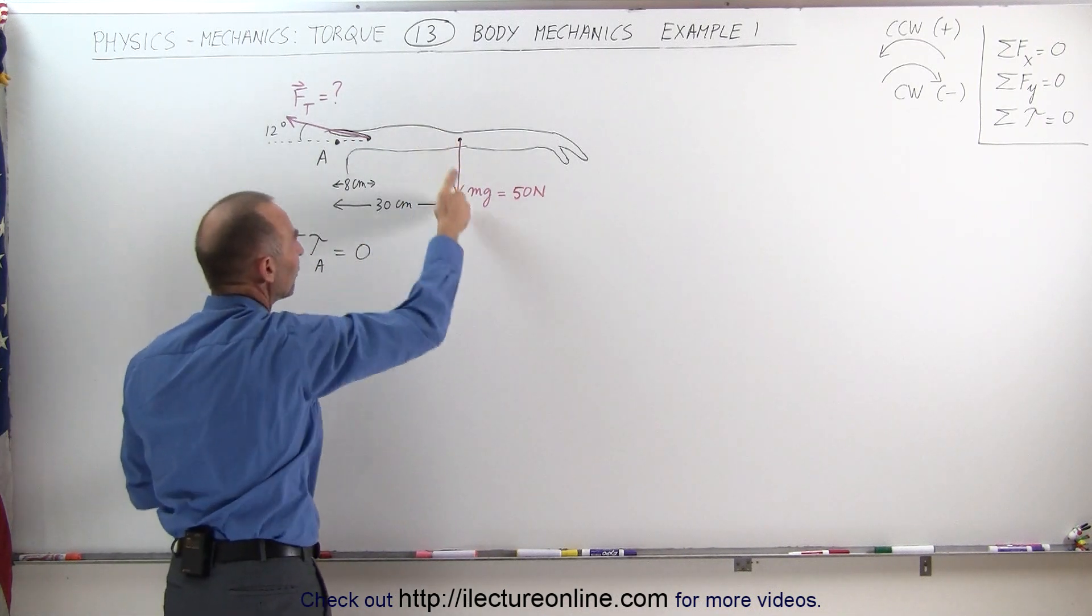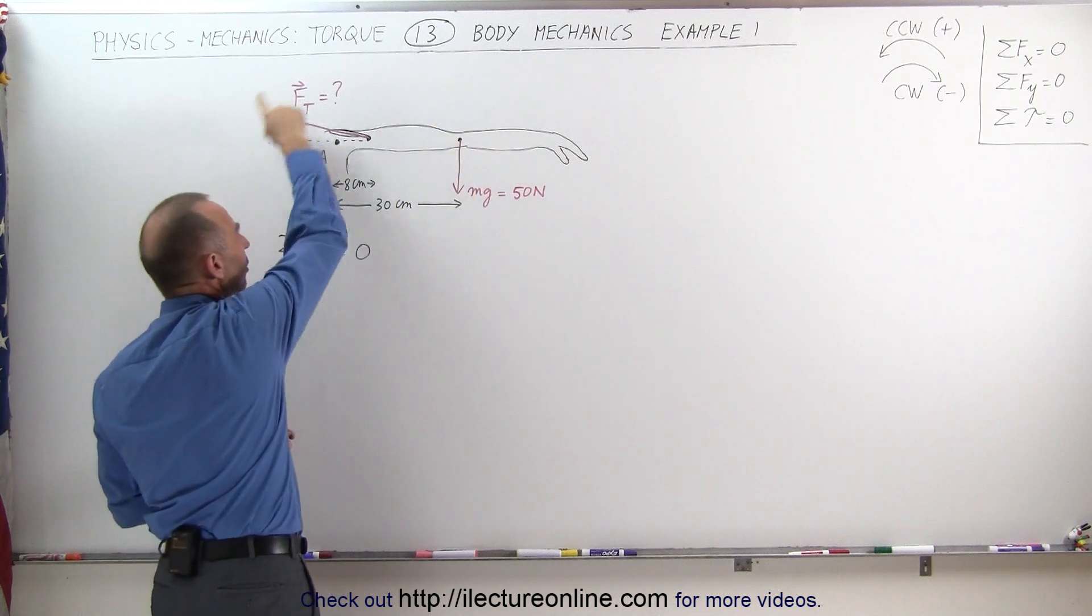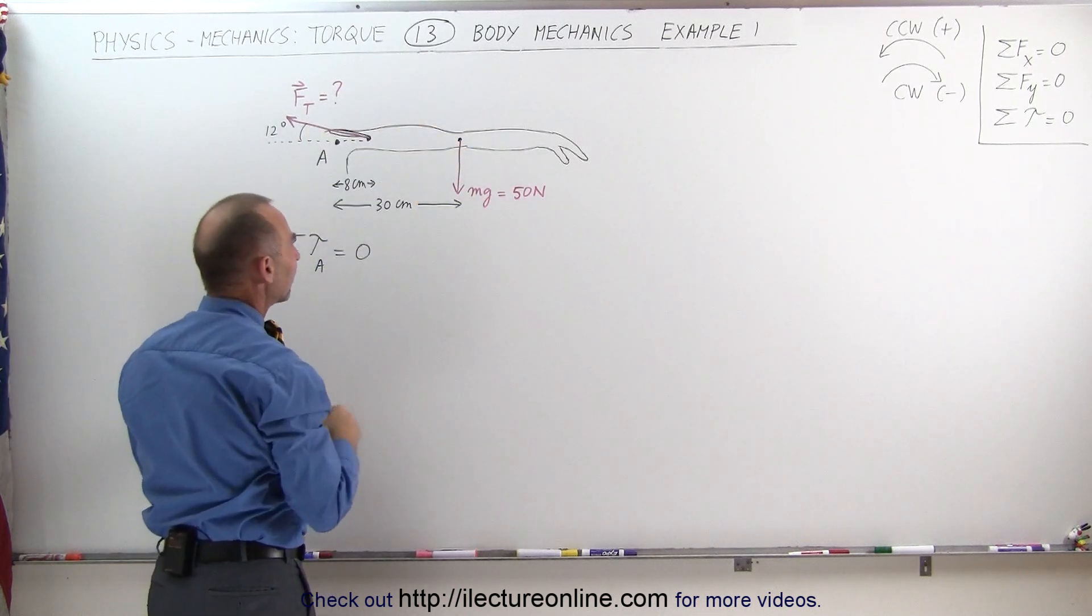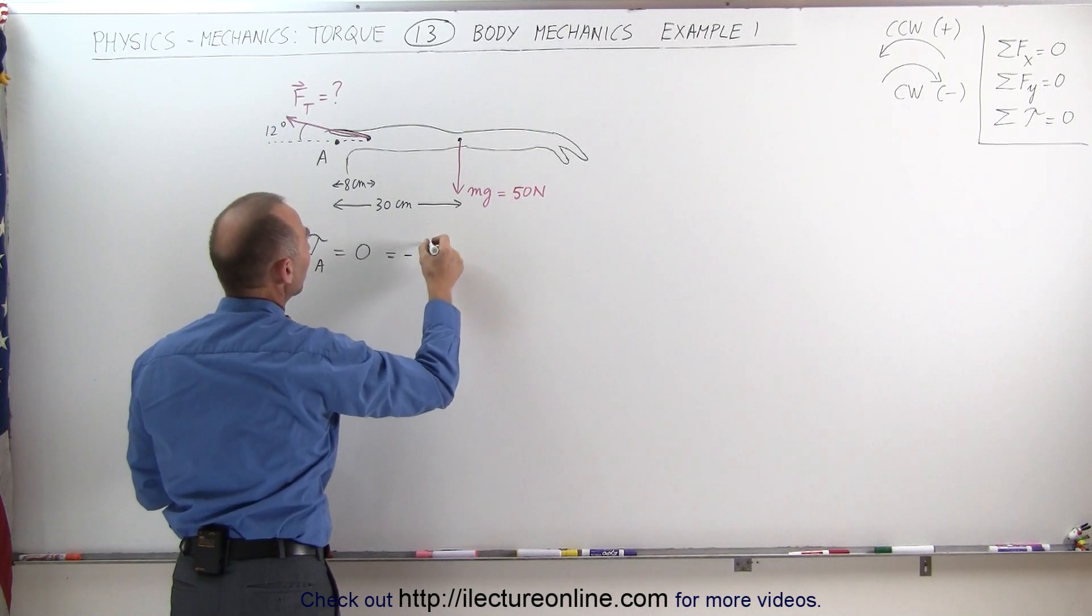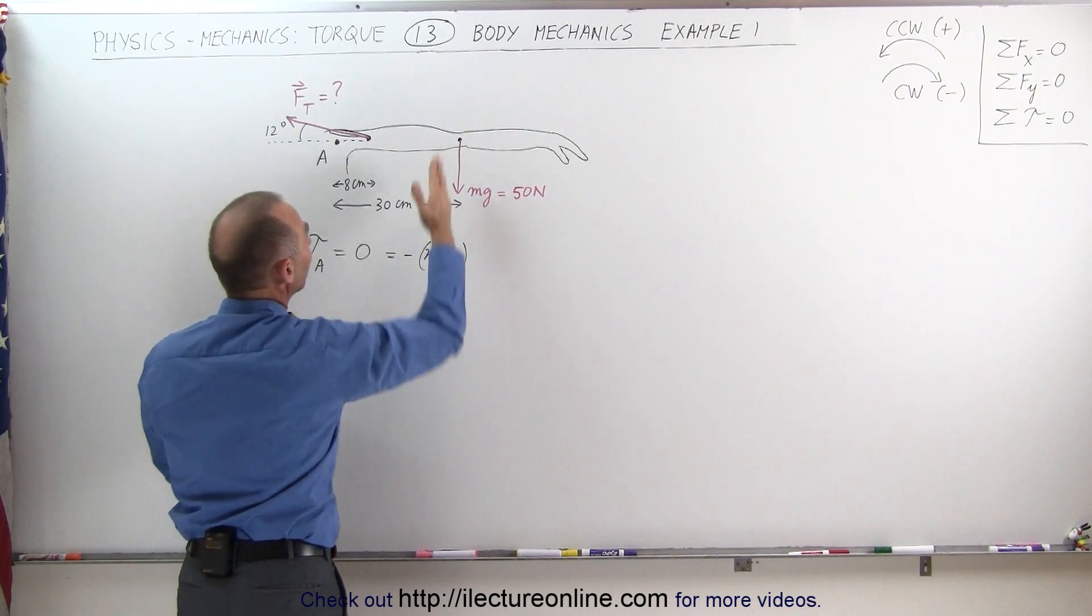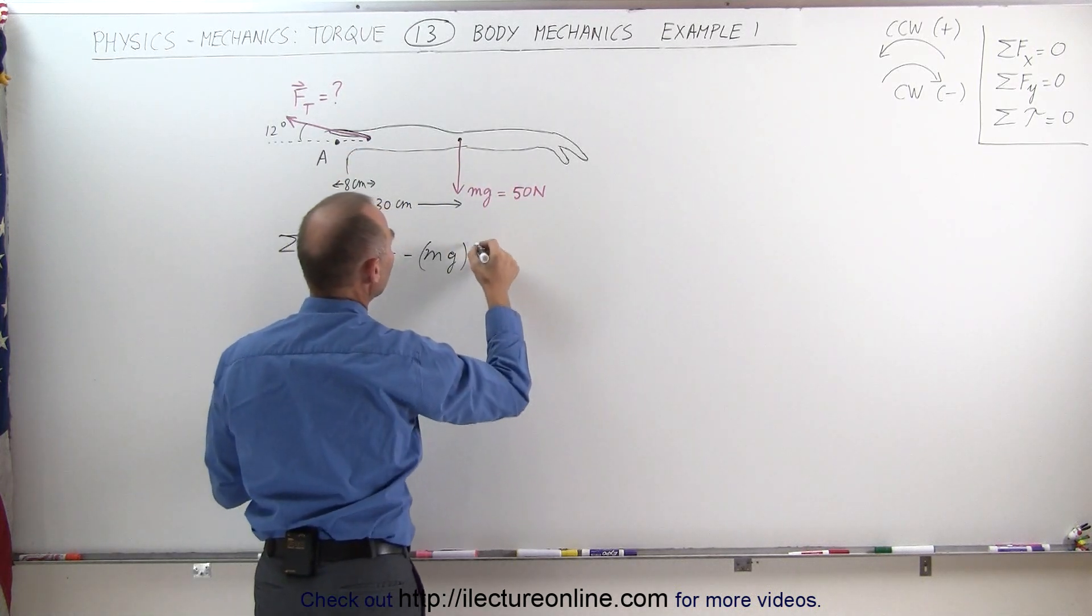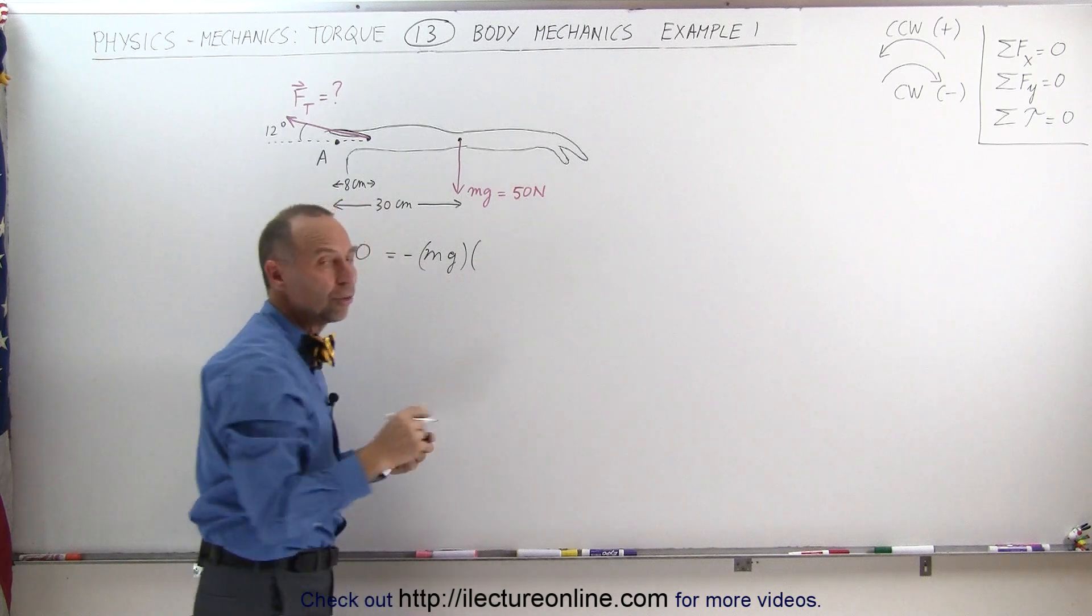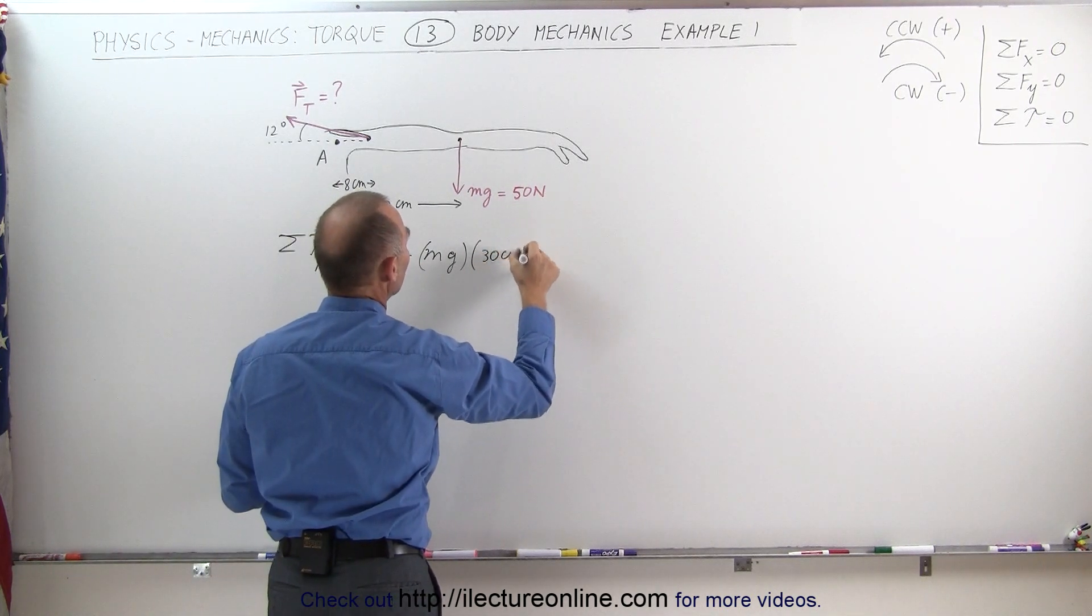First of all, we have the weight of the arm. Related to this pivot point, it gives that a clockwise direction, that's a negative torque, so that would be equal to minus the weight times the perpendicular distance from the line of action of the force to the pivot point, which would be 30 centimeters. And we can leave it in centimeters because I believe centimeters will end up canceling out, so let's write it as 30 centimeters.